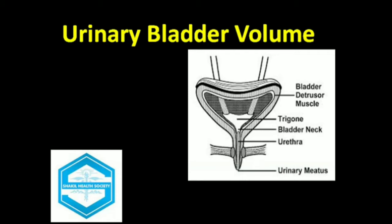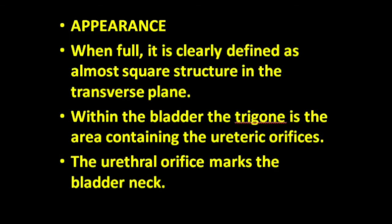The volume should be calculated in pre and post-micturition statuses. When the urinary bladder is full, it is defined as a square structure. Within the bladder, the trigone is the area containing the ureteric orifices, and the ureteral orifice marks the bladder neck.